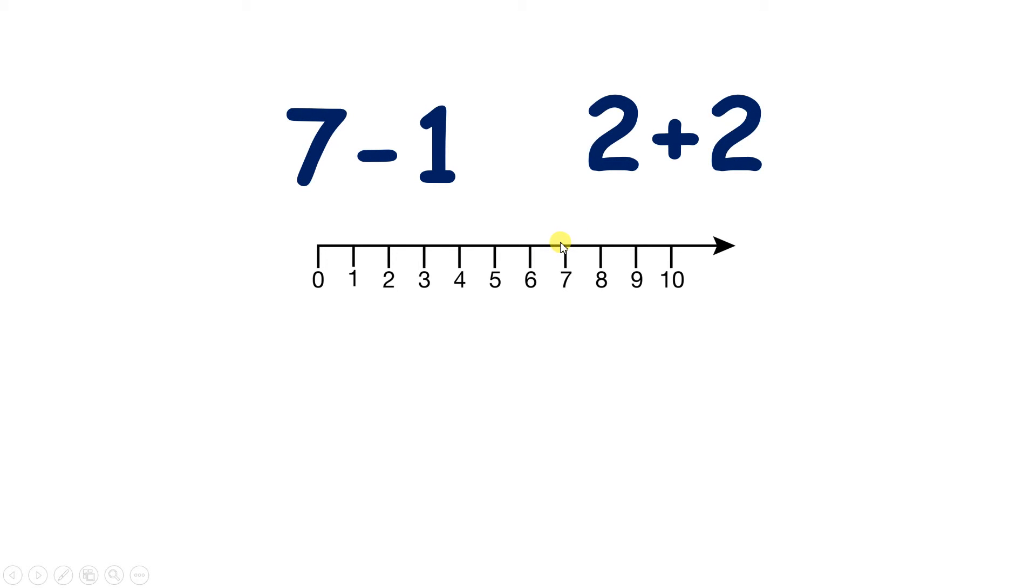Here we want to compare two different calculations. We've got 7 minus 1, and 2 plus 2. So let's start with 7 minus 1. If we're on 7, and we go back 1, we get to 6.